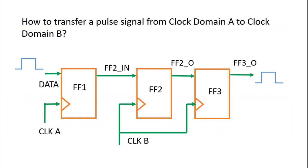In our previous video we concluded that if we want to transfer a pulse from clock domain A to clock domain B, irrespective of the frequency of both clock domains, a simple multi-flop synchronizer cannot be used. At the end of that video I asked what is the best way to transfer a pulse irrespective of clock frequency and phase difference, and many of you answered correctly in the comment section.